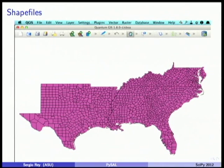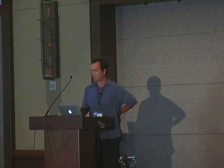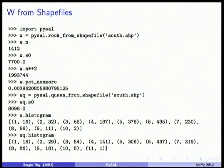The most common type of spatial data a social scientist deals with is a shapefile. The problem with shapefiles for building neighbor relationships is that they're non-topological — known as spaghetti files. You have to extract the topology. We spent a lot of time developing fast algorithms to build weights from shapefiles. For example, taking southern counties, it's basically a one-liner to build a weights object based on rook or queen contiguity.